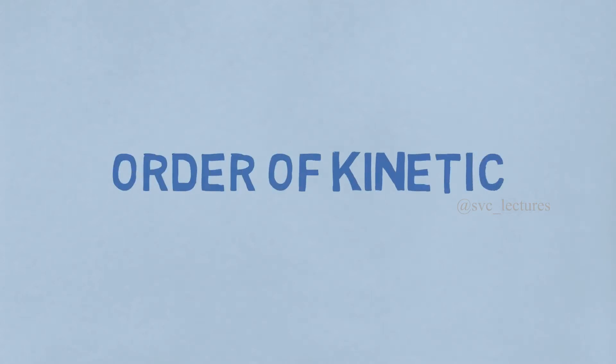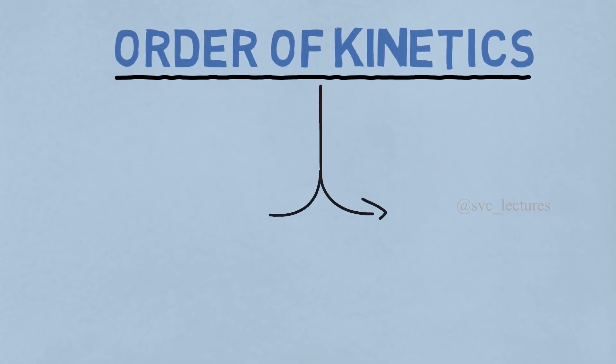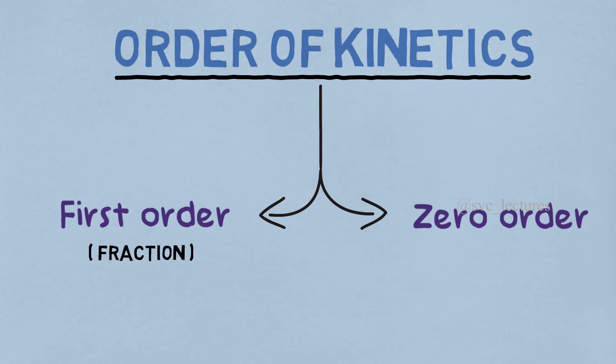In today's lecture, we are going to learn about order of kinetics. During elimination, drugs either follow first-order or zero-order kinetics. Both orders have something constant. In first-order, for a period of time, the fraction of drug eliminated is constant. Whereas in zero-order, for a period of time, the amount of drug eliminated is constant.